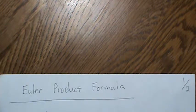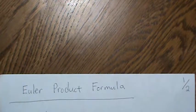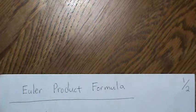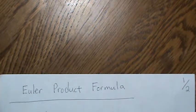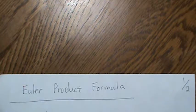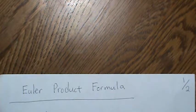In this video we're going to look at the Euler product formula, which is a quite interesting result. Lately the Riemann zeta function has been in the news, and you always hear how the primes are related to it. In this video we're going to look at step one of how the primes are related to the Riemann zeta function.